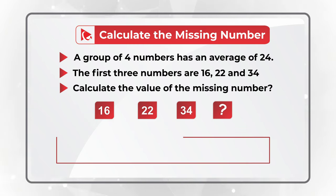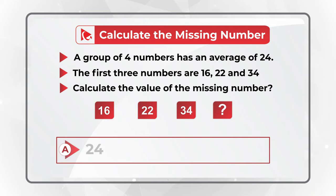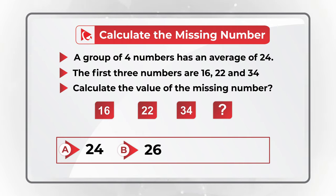You have four different choices: Choice A: 24, Choice B: 26, Choice C: 18, and Choice D: 21.